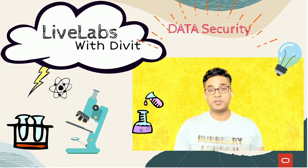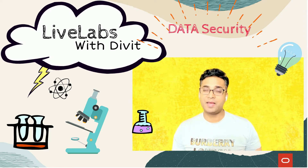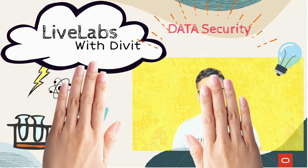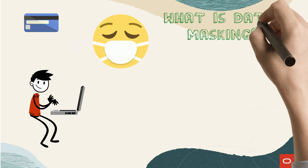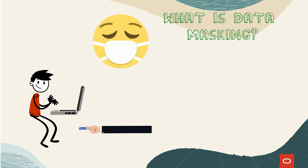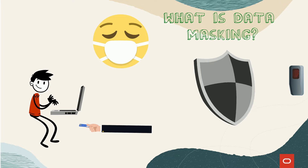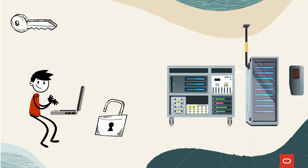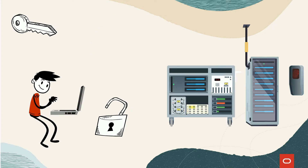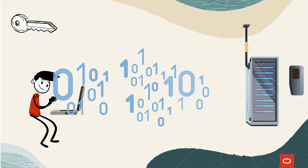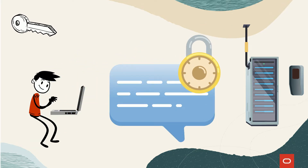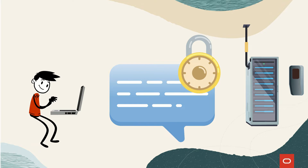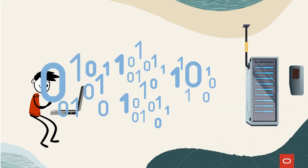We will talk about data masking and subsetting on this show, along with the Live Labs associated with security, data masking and subsetting. Data masking is the process of replacing sensitive information copied from production databases to test non-production databases with realistic but scrubbed data based on masking rules. Data masking is ideal for virtually any situation when confidential or regulated data needs to be shared with non-production users.